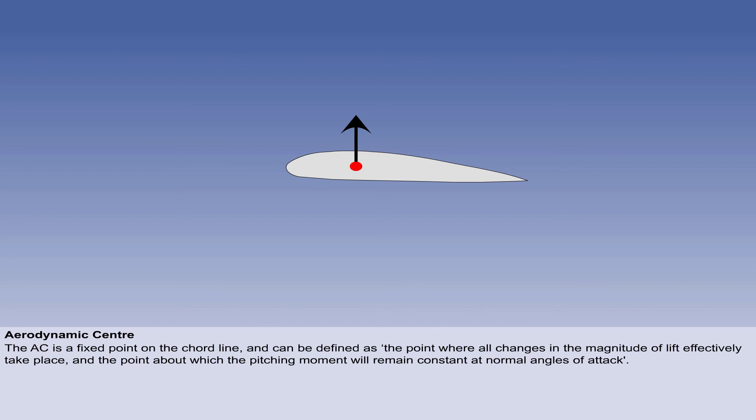The aerodynamic centre, or AC, is a fixed point on the chord line and can be defined as the point where all changes in the magnitude of lift effectively take place, and the point about which the pitching moment will remain constant at normal angles of attack.